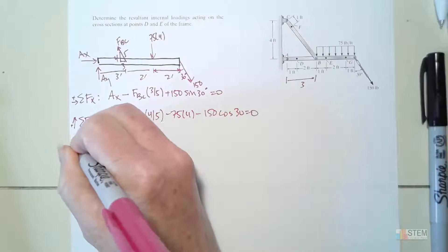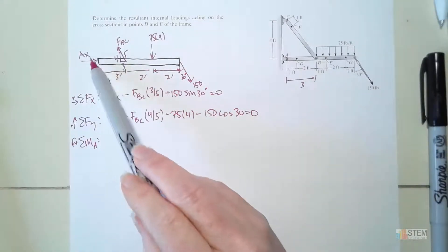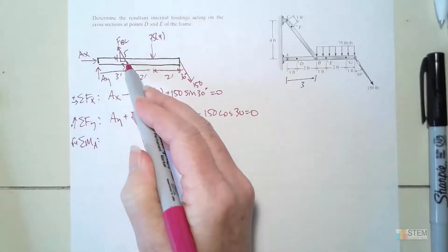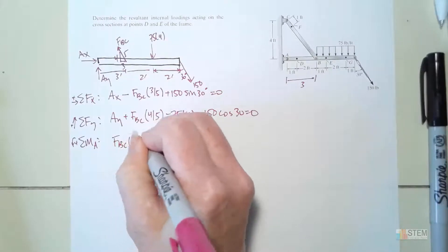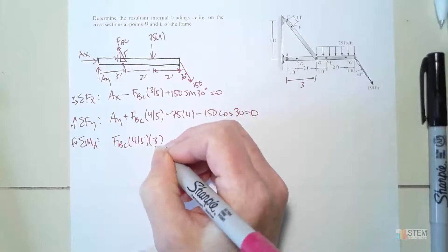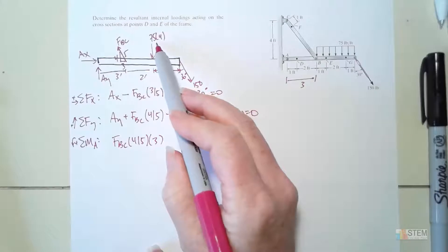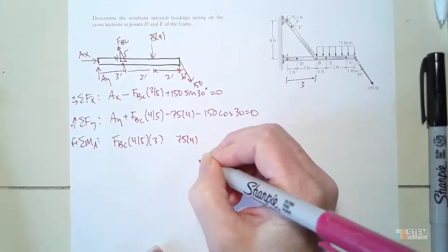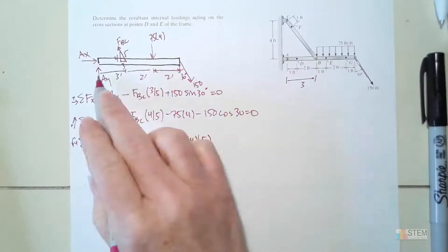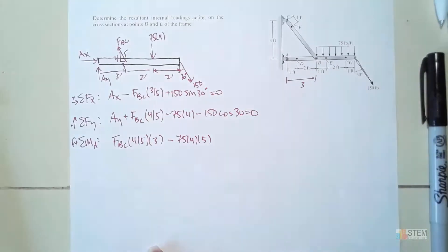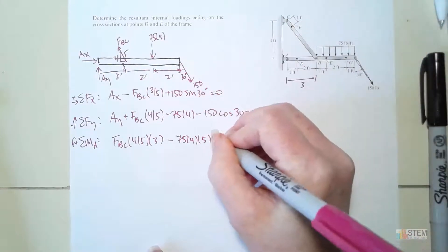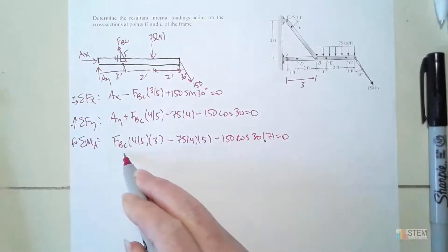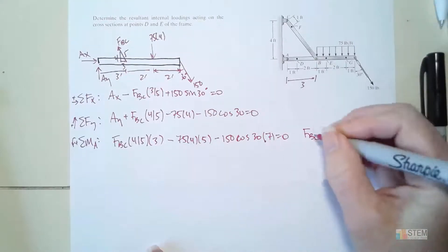So let's do the moment equation about A, because two unknown forces pass through that point. Taking moments about A: FBC times 4/5 times 3 (counterclockwise, positive), minus 75 times 4 times 5 (clockwise, negative), minus 150 cosine 30 times 7 (negative, going down), equals zero. Now we can solve for FBC first, then substitute back into the other equations.